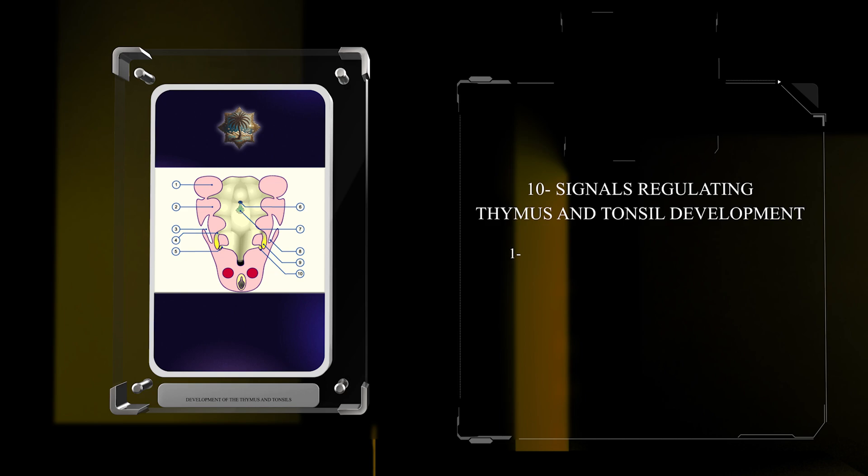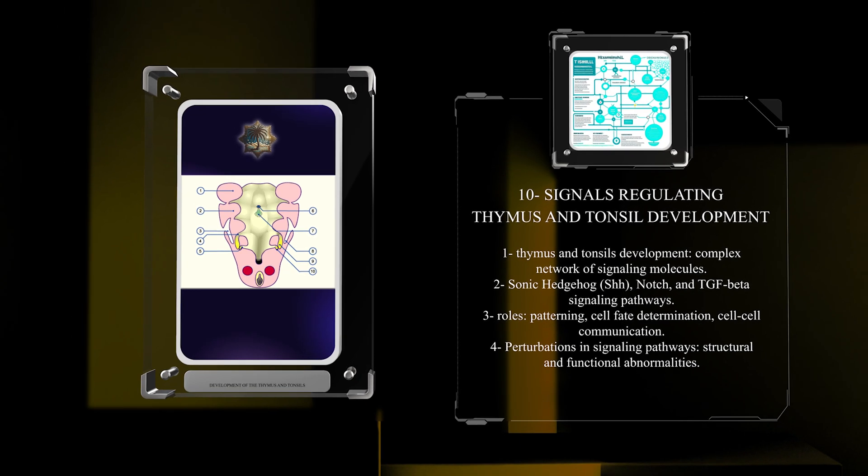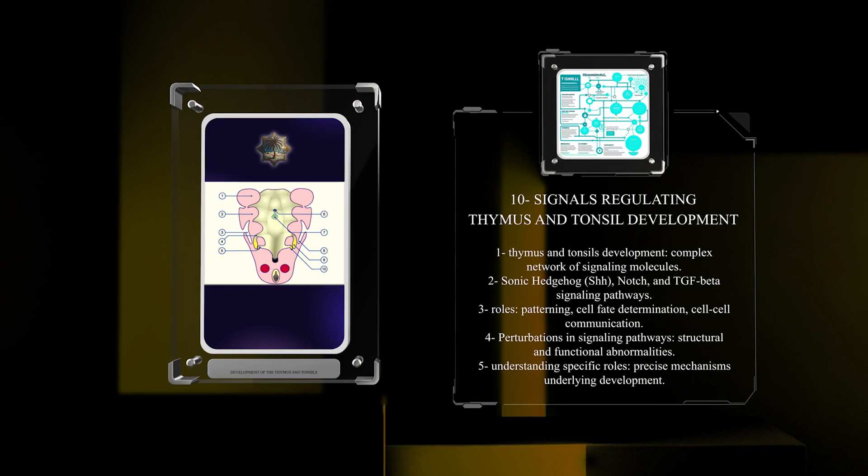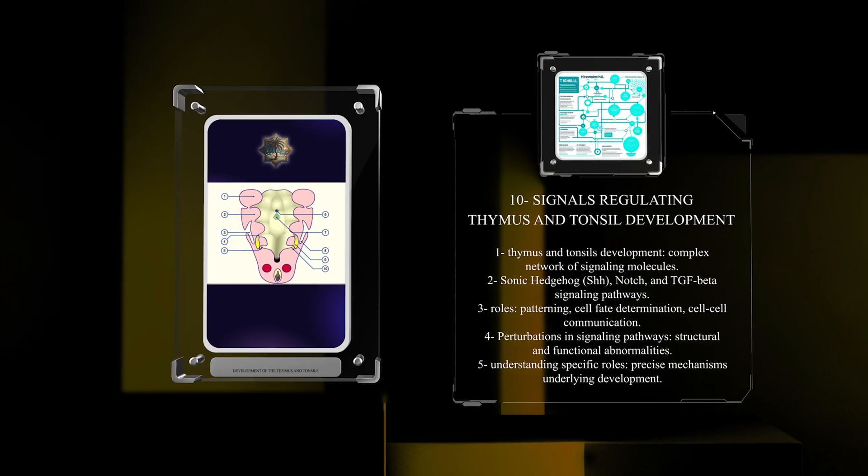The development of the thymus and tonsils is guided by a complex network of signaling molecules. Sonic hedgehog (SHH), NOTCH, and TGF-beta signaling pathways are among the key signaling pathways involved in thymus and tonsil development.